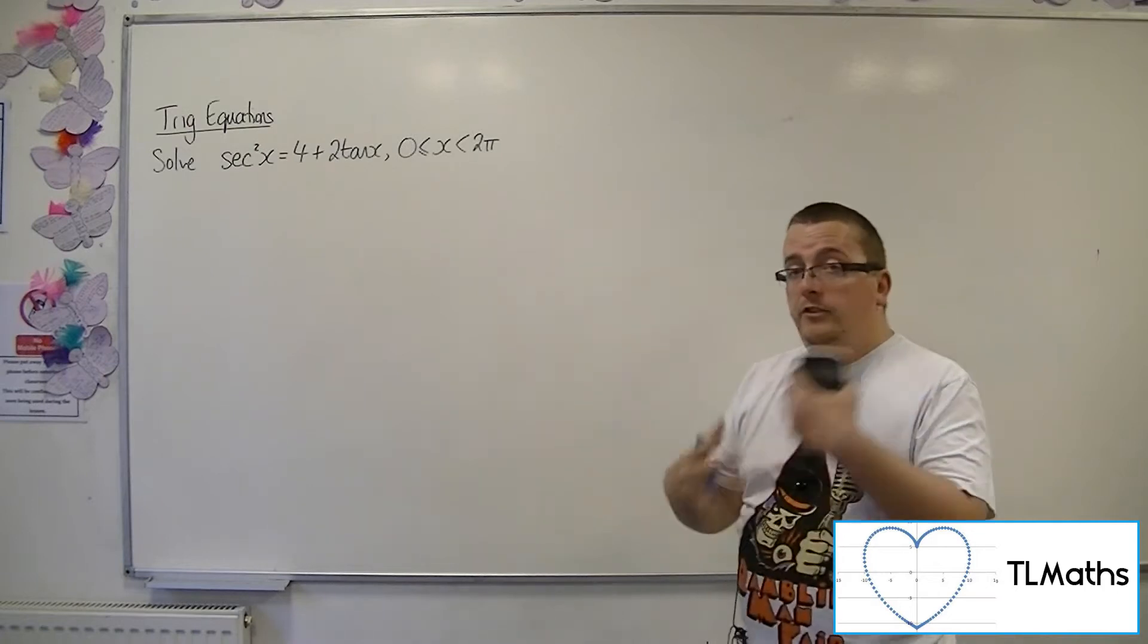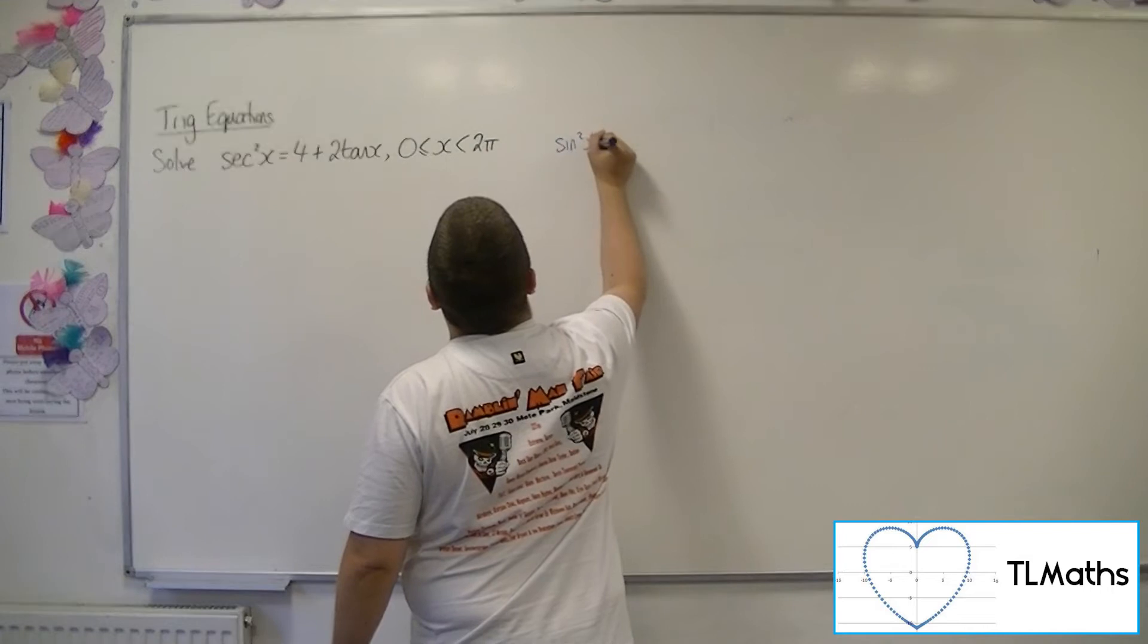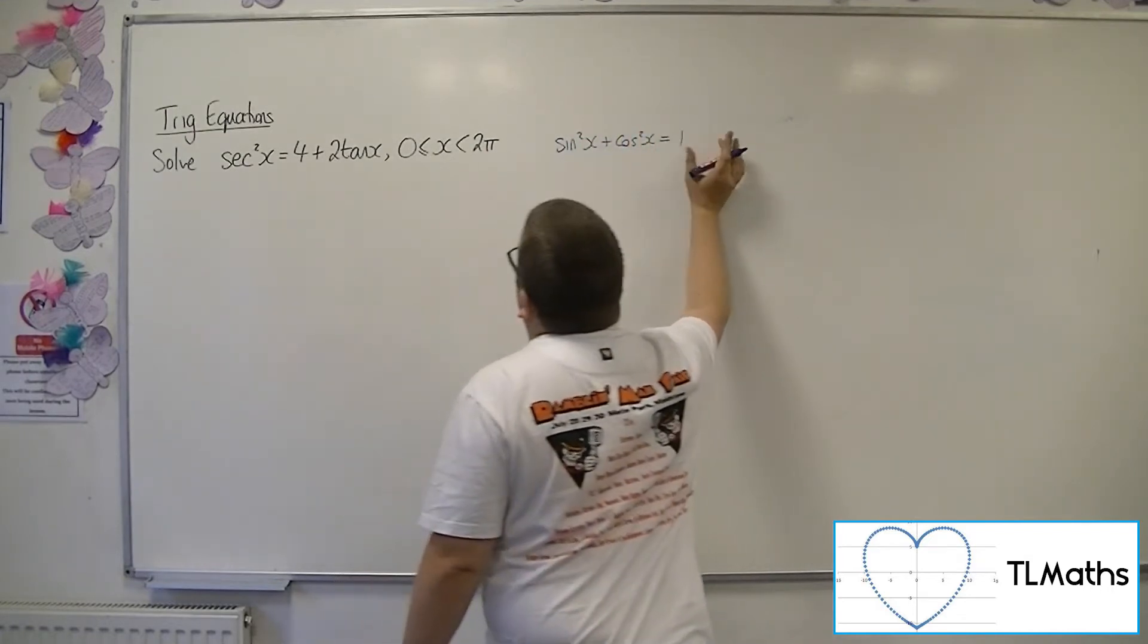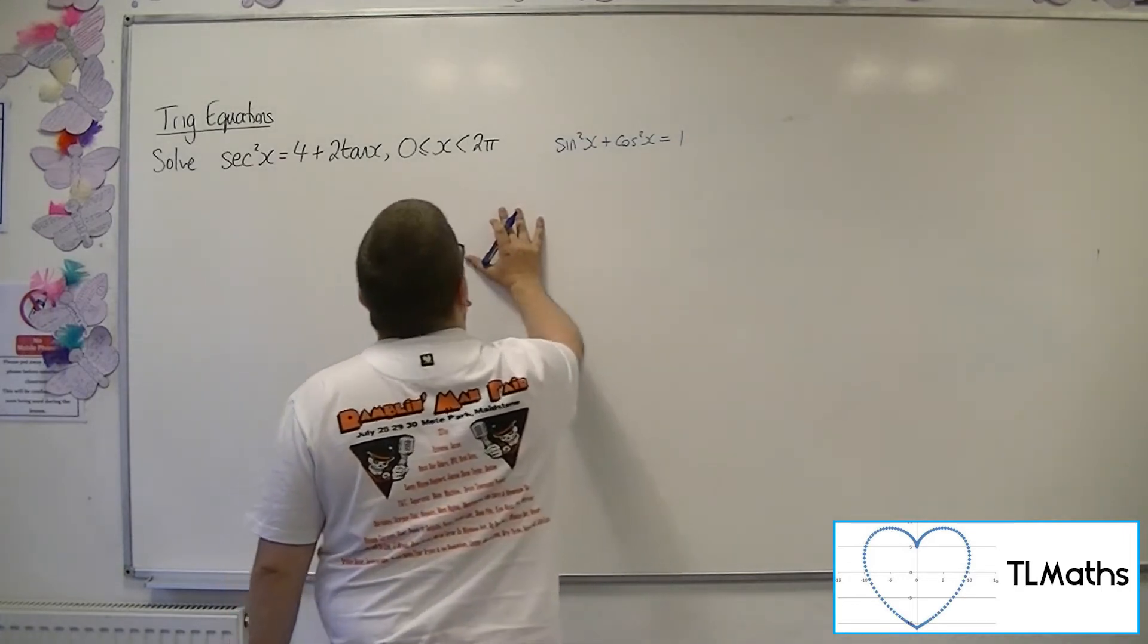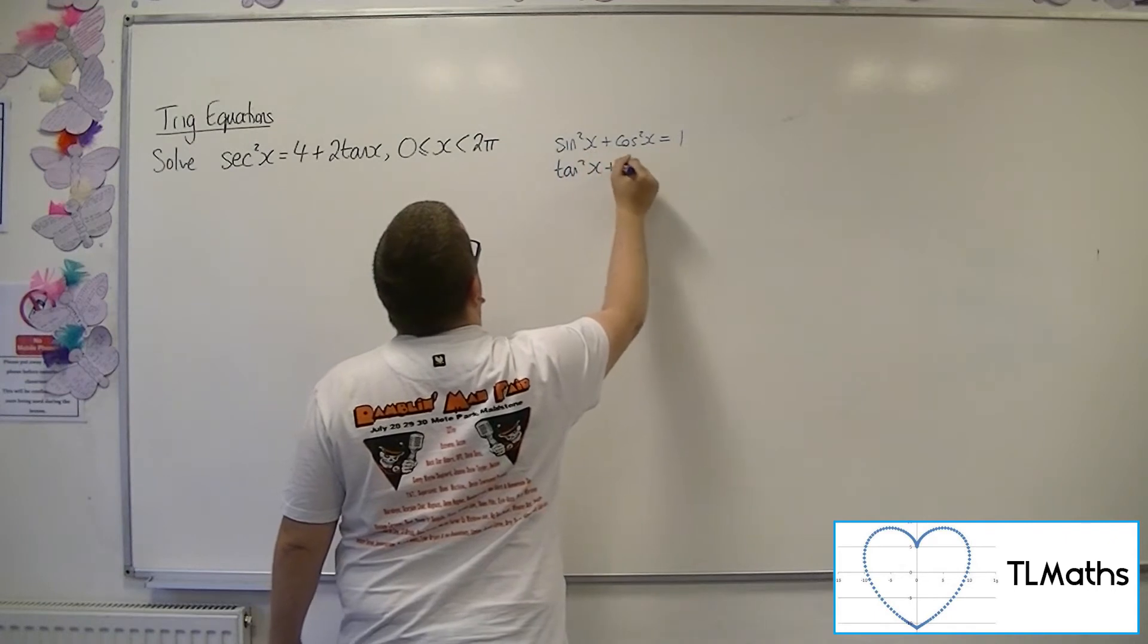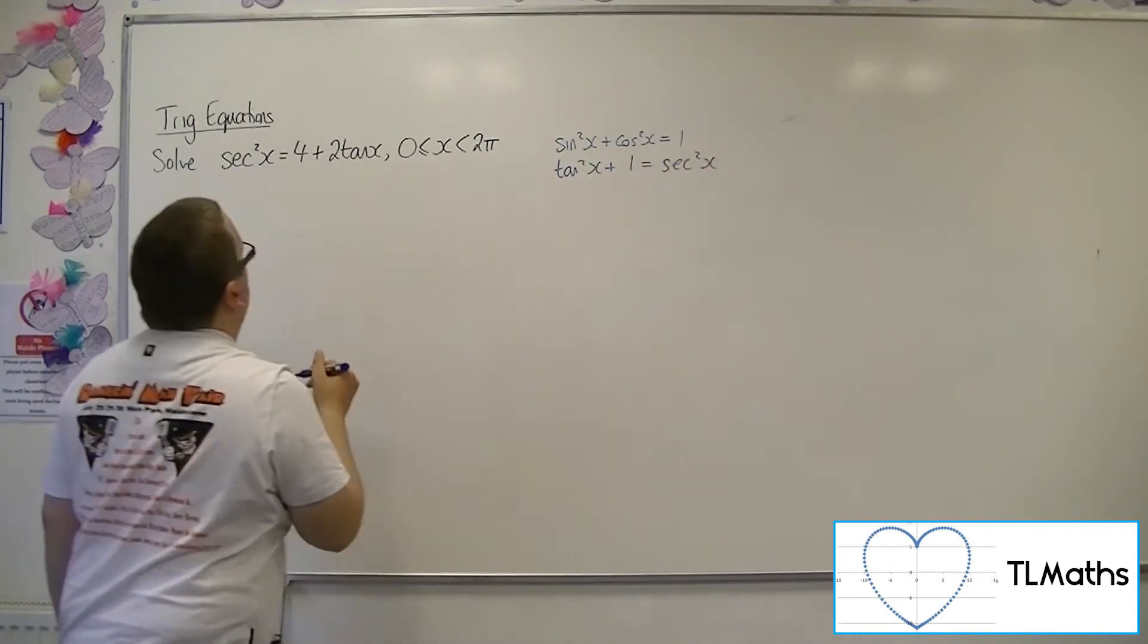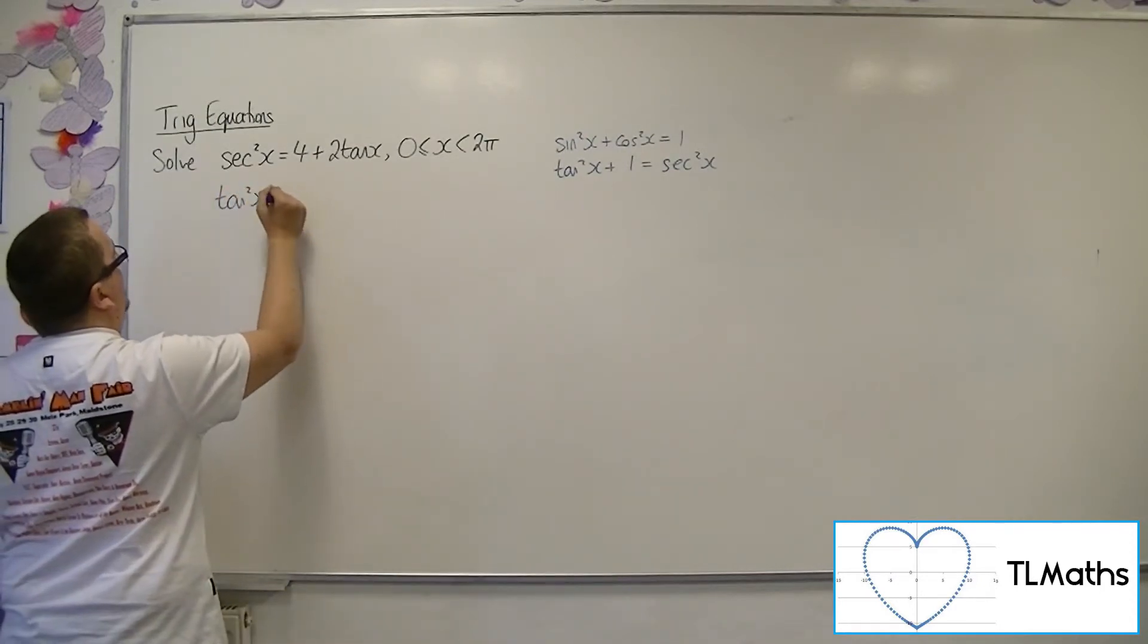If I go back to our trig identity, sin squared plus cos squared equals 1, I can get sec squared by dividing through by cos squared. So that will give me tan squared plus 1 equals sec squared x. So I can replace the sec squared with tan squared plus 1.